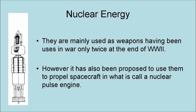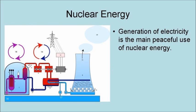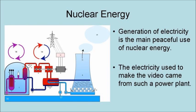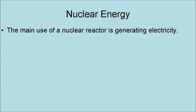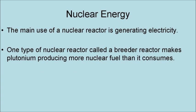However, it has also been proposed to use nuclear bombs to propel spacecraft in what is called a nuclear pulse engine. The generation of electricity is the main feasible use of nuclear energy. The electricity used to make this video came from such a power plant. The main use of a nuclear reactor is generating electricity. One type of nuclear reactor, called the Breeder Reactor, makes plutonium, producing more nuclear fuel than it consumes.